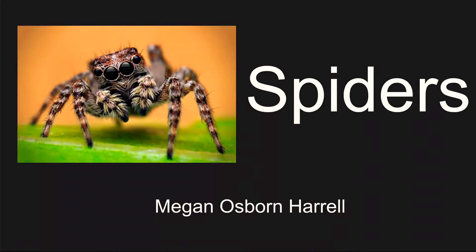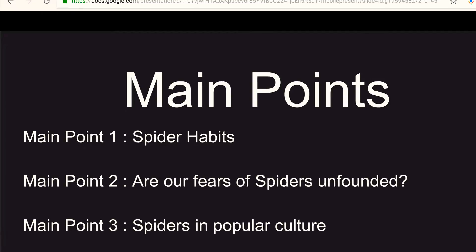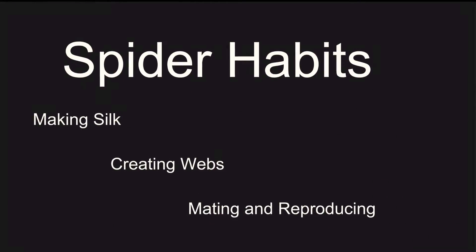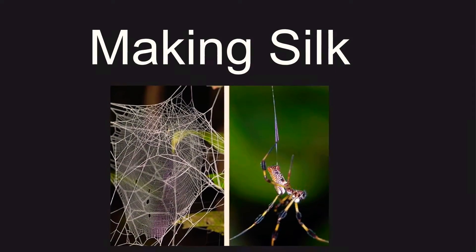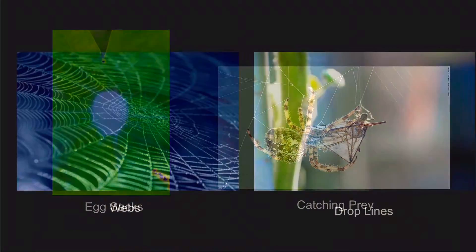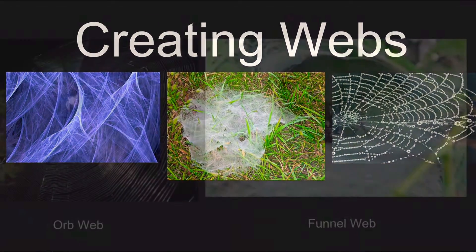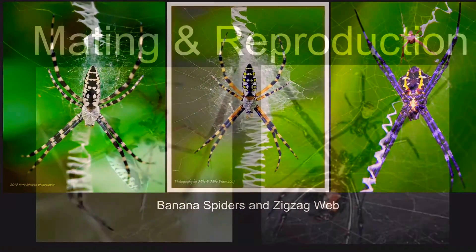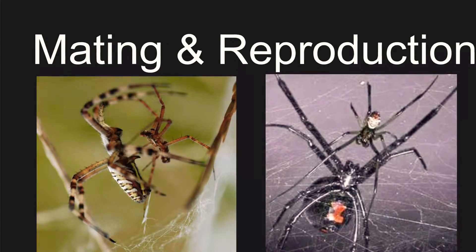It is said that you will eat 200 spiders in your sleep within your lifetime. This might sound like a terrifying statistic, but why? Aren't spiders just little harmless insects? Actually, they're not — they're what we call an arachnid. Today I'm going to share with you some of the common spider's habits, why we might be frightened of these little creatures, and how we as humans have made a ton of money off the idea of the spider. So now I go into my main points. My first main point is spider habits — within this main point, I talk about the different types of silk they make, because spiders make like seven different kinds of silk. My next sub-point is creating webs — there are different kinds like an orb web, a funnel web, a sheet web, or a cob web.